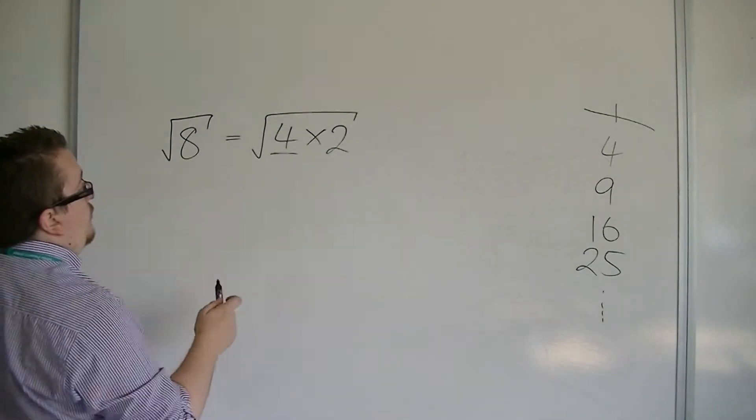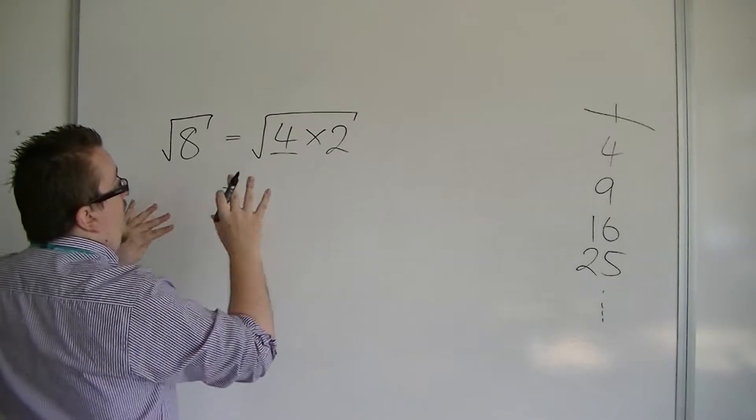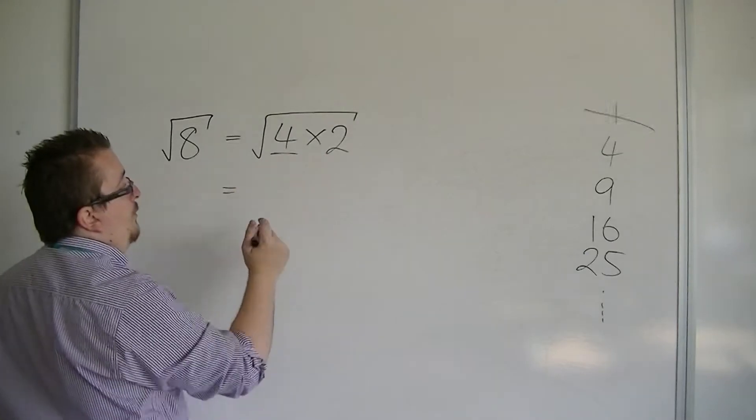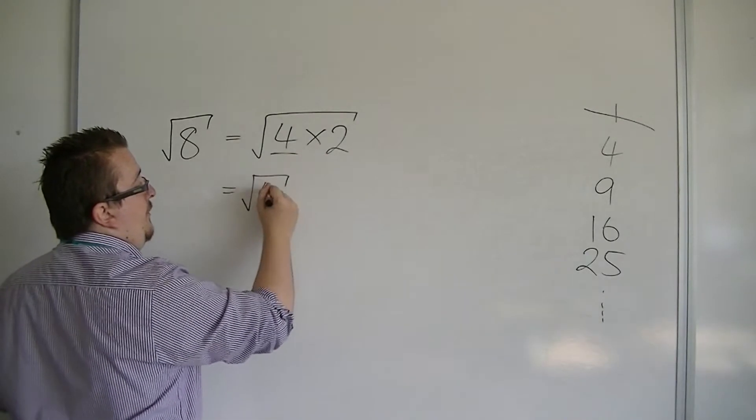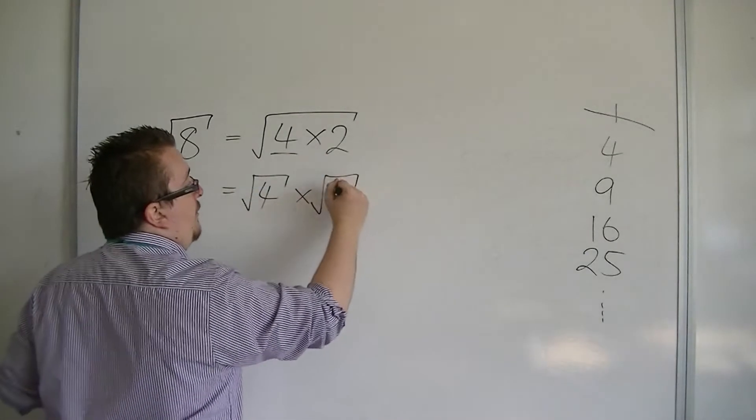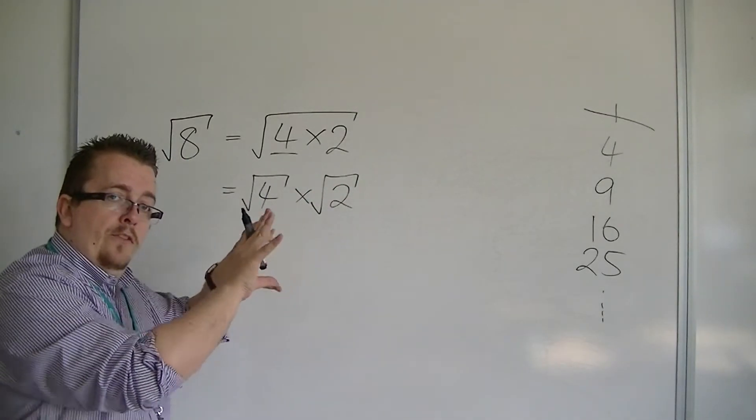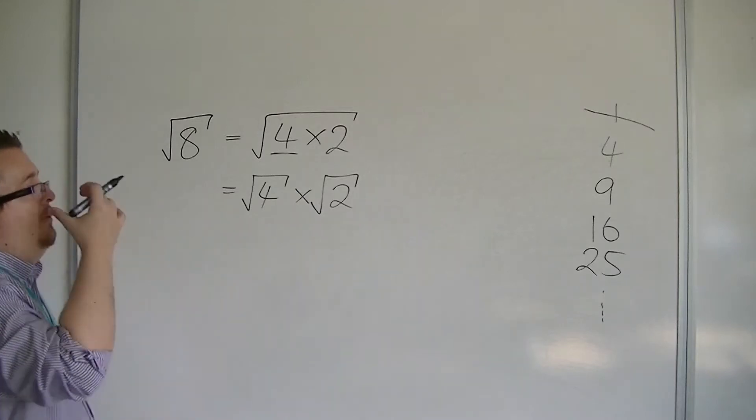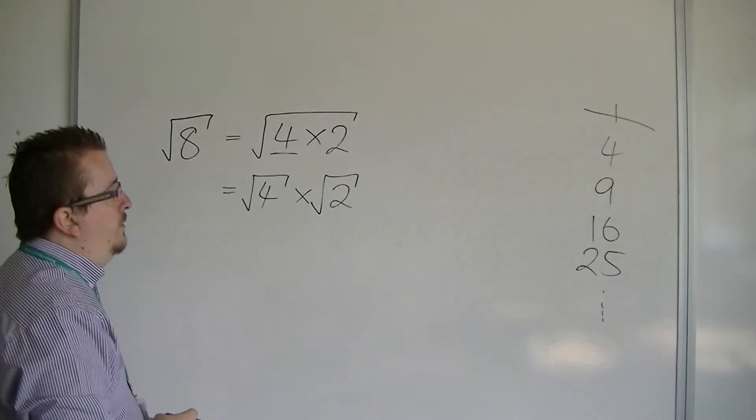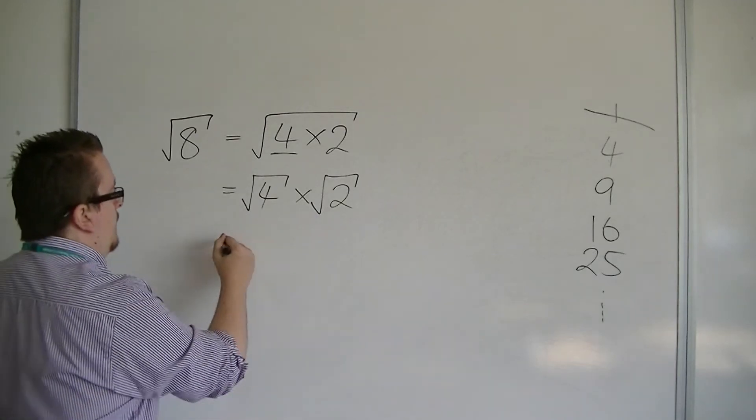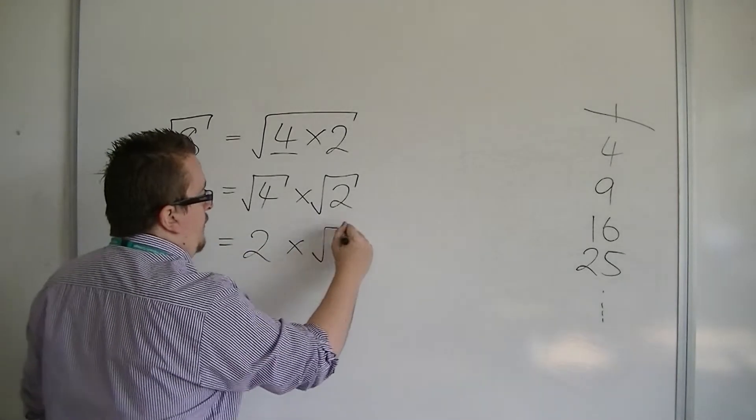And then, I can use a technique that allows me to say, if the square root of 4 times 2 is the square root of 8, then the square root of 4 times 2 is the same as the square root of 4 times the square root of 2. You can separate the square root symbol, the radical symbol, like so. And then, we can say the square root of 4 is just 2. So, that's just 2 lots of root 2.